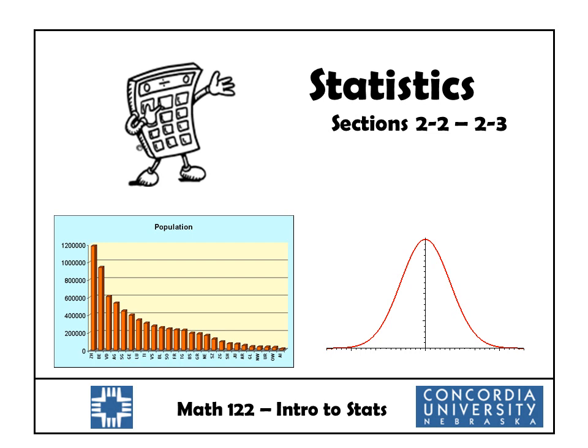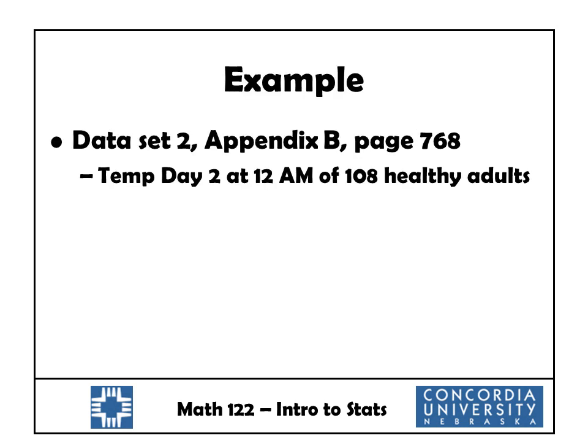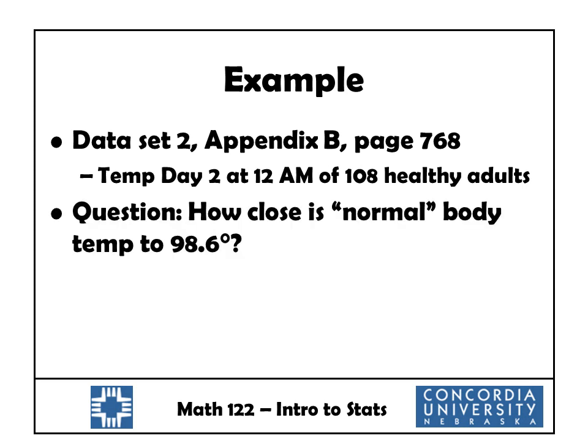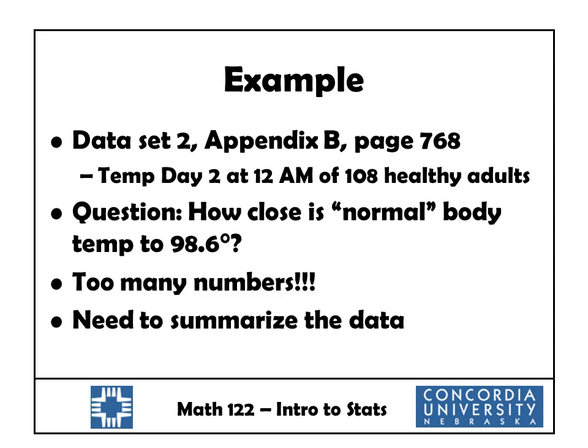Hello, this is the lesson for section 2.2 to 2.3. In this section, we are going to see our very first type of statistical graph, and it's a very important one called a histogram. In data set 2 from appendix B on page 768, there is a list of body temperatures of 108 healthy adults. We're going to use that data to answer the question: how close is normal body temperature to 98.6? You've been told forever that normal is 98.6, and we're going to try to analyze that claim a little bit.